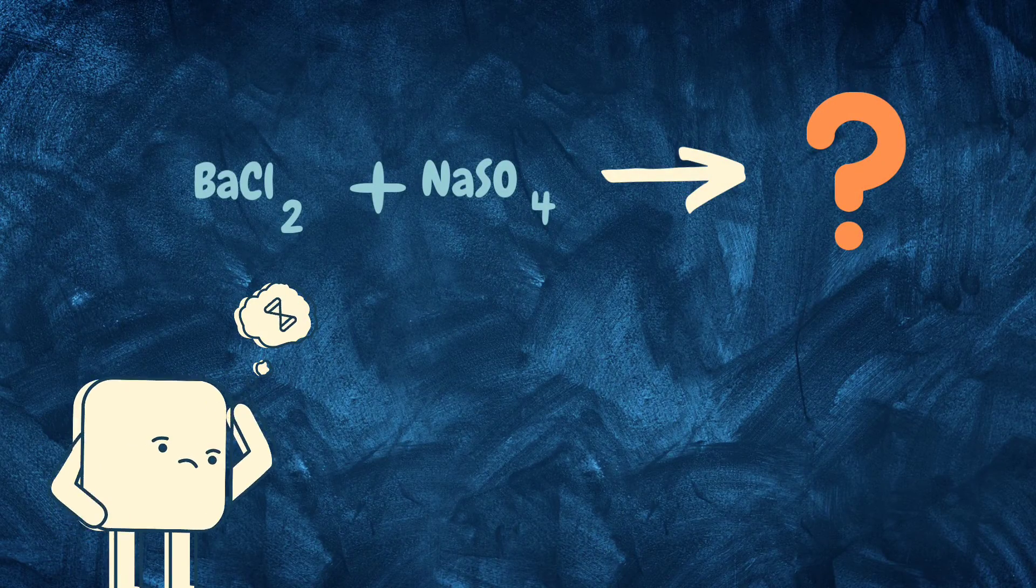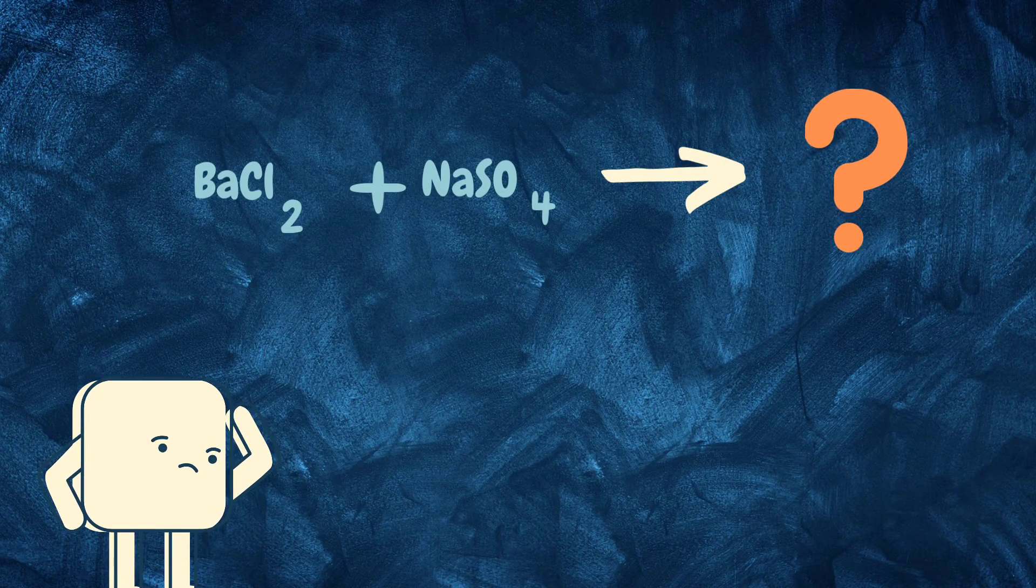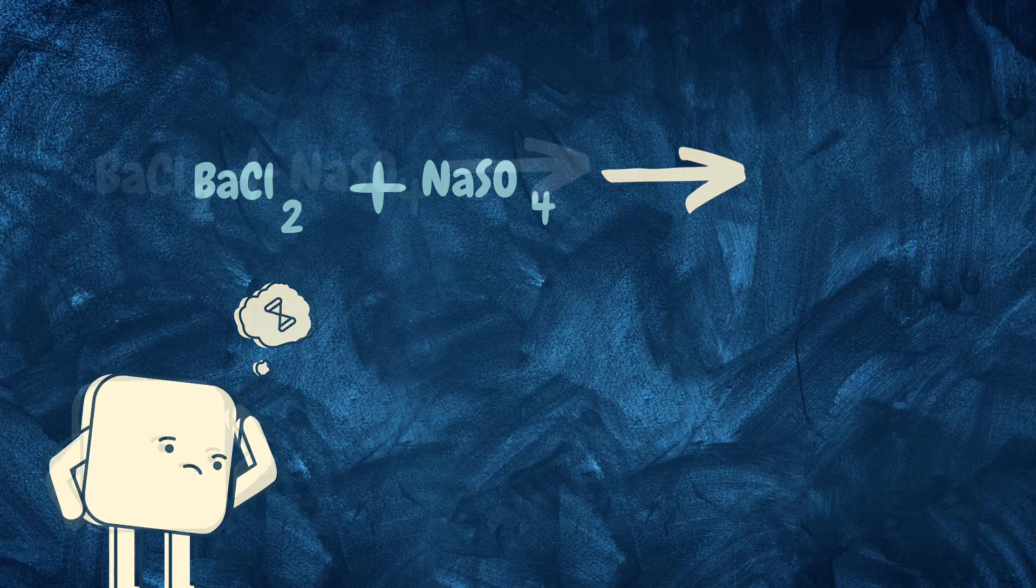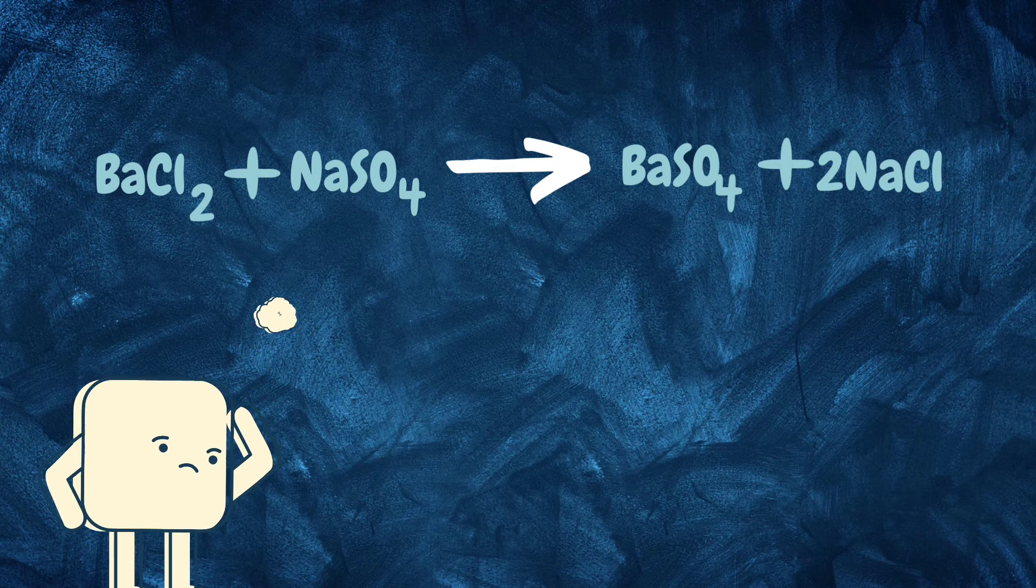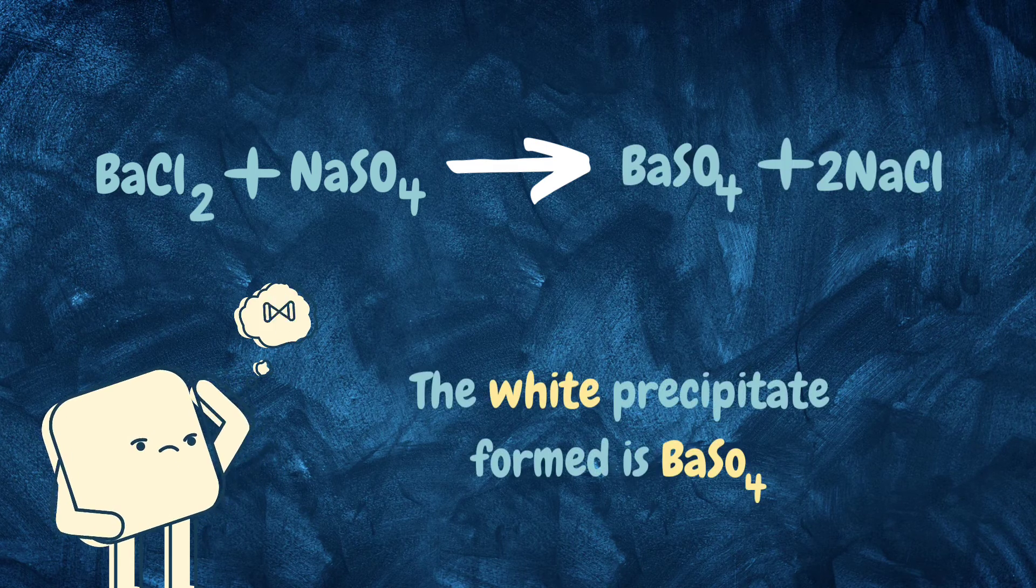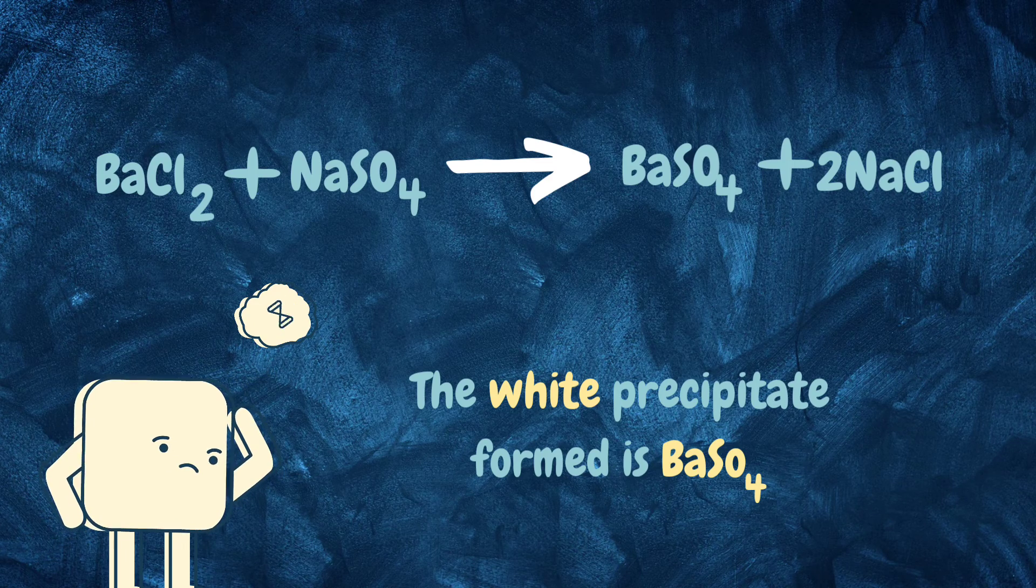After the chemical reaction, a white-colored precipitate is observed. Can you guess what this white precipitate could be? The products formed are barium sulfate and sodium chloride. Out of which barium sulfate is the white precipitate and insoluble in water.